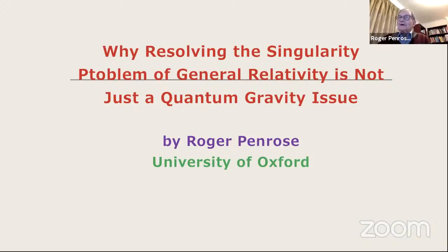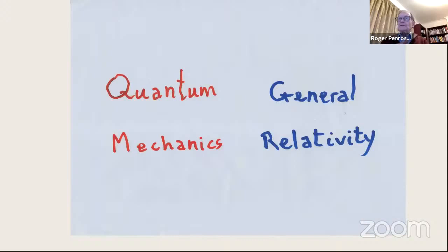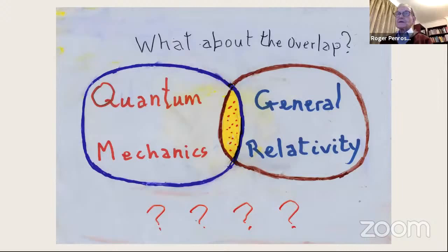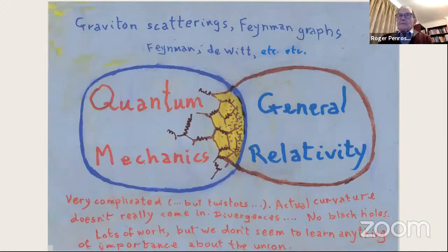Thank you very much. It's a great pleasure and honor to be able to give this talk. I hope it's not a disappointment to people who think they've solved quantum gravity. The two great revolutions of 20th century physics are quantum mechanics and general relativity — separate theories without much connection. However, there are ways of treating the intersection between the two.